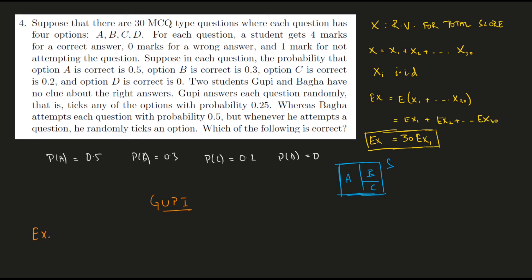Now let's start our discussion with GUPY. If I figure out the expected score of GUPY in the first question, I can figure out the total expected score. I'm going to use something called the law of total expectations, which breaks down the entire problem into simpler parts. We don't really know what the correct answer is — we're only given the probabilities: A with 0.5, B with 0.3, C with 0.2, and D. That is why I need to use the law of total expectations.